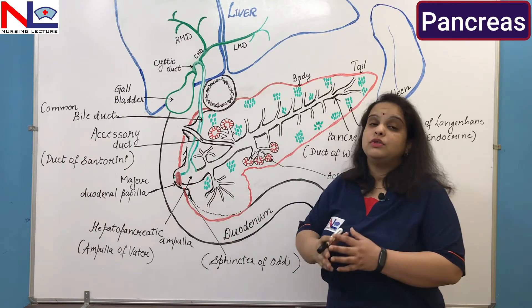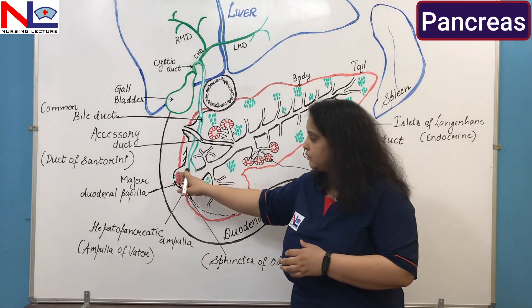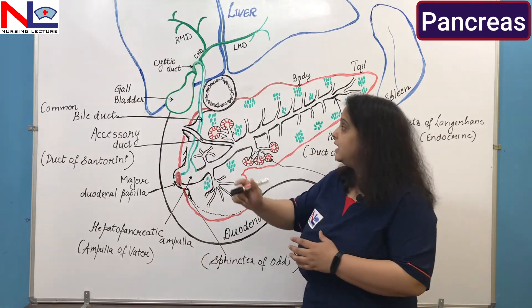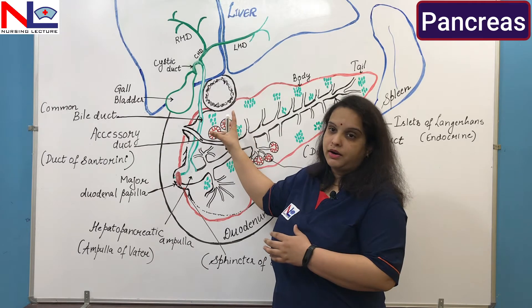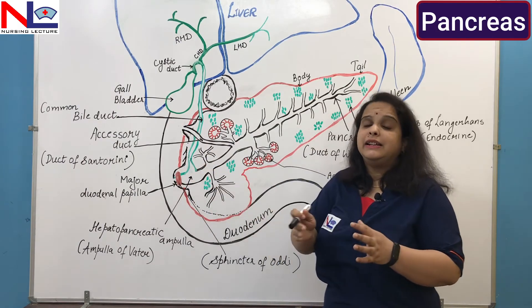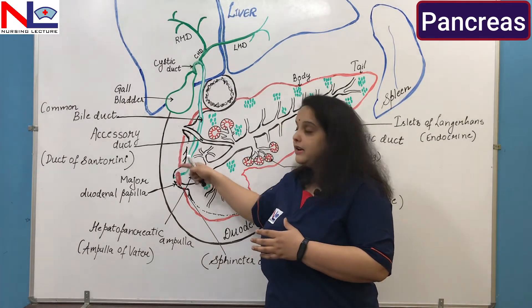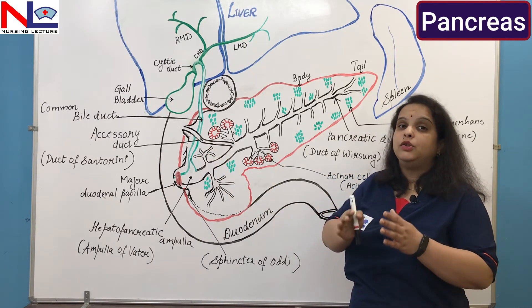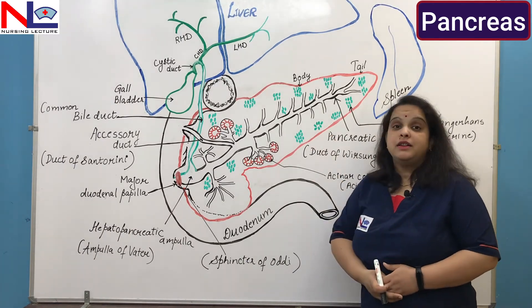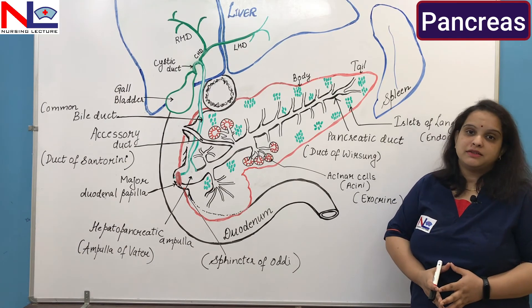The secretion of pancreatic juice is composed of water, salts, and certain enzymes. The salt released is mainly sodium bicarbonate, which neutralizes the acidic content of food coming from the stomach — because if acidic food contacts the small intestinal lining it can damage the mucosa. So sodium bicarbonate mixes with the food content and neutralizes its acidity. In this lecture we have studied the structure of the pancreas as part of the accessory organs in the digestive system. Thank you.